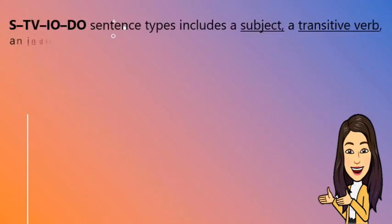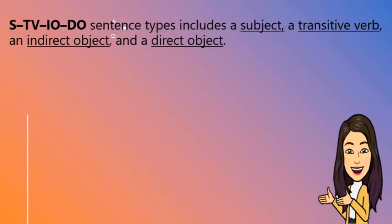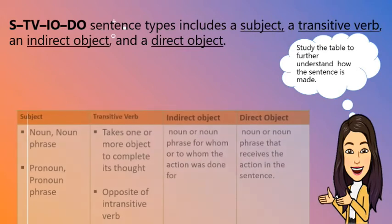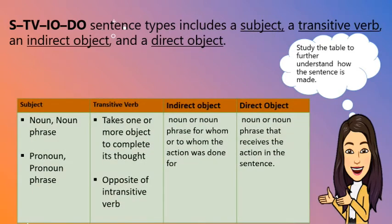The STVIODO sentence pattern includes a subject, a transitive verb, an indirect object, and a direct object. Study the table to further understand how the sentence is made. Subject can be a noun or noun phrase, a pronoun or a pronoun phrase. A transitive verb takes one or more objects to complete its thought — the opposite of the intransitive verb.